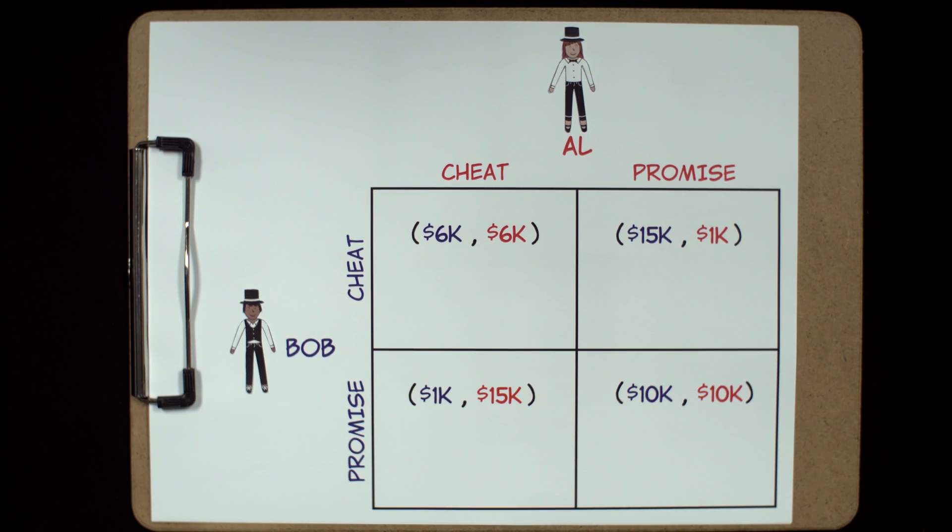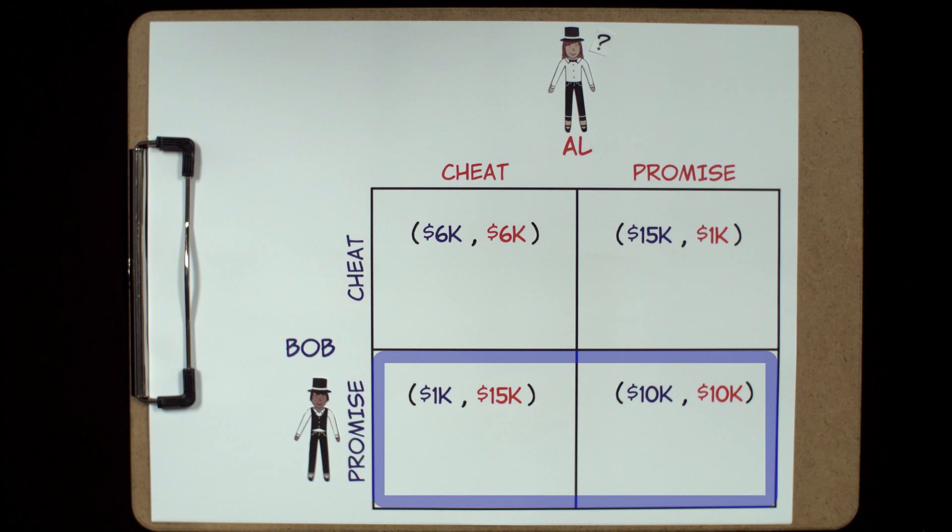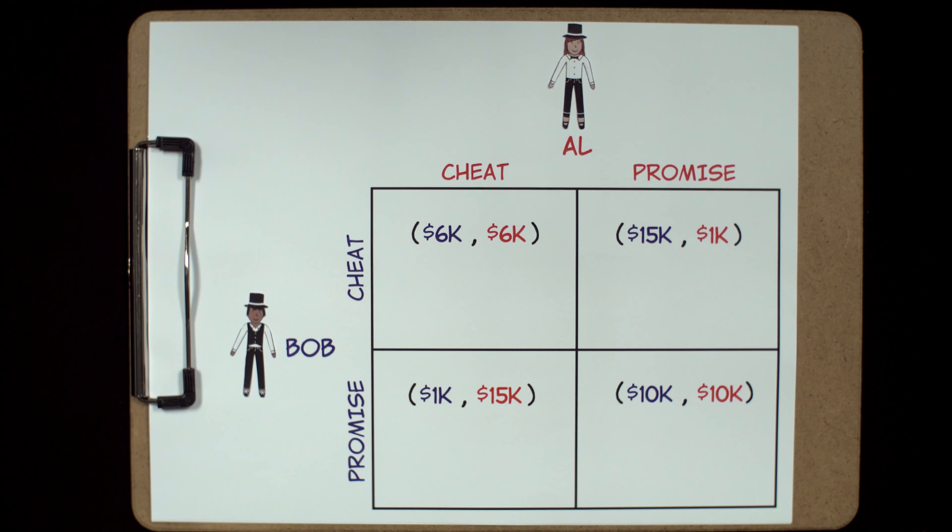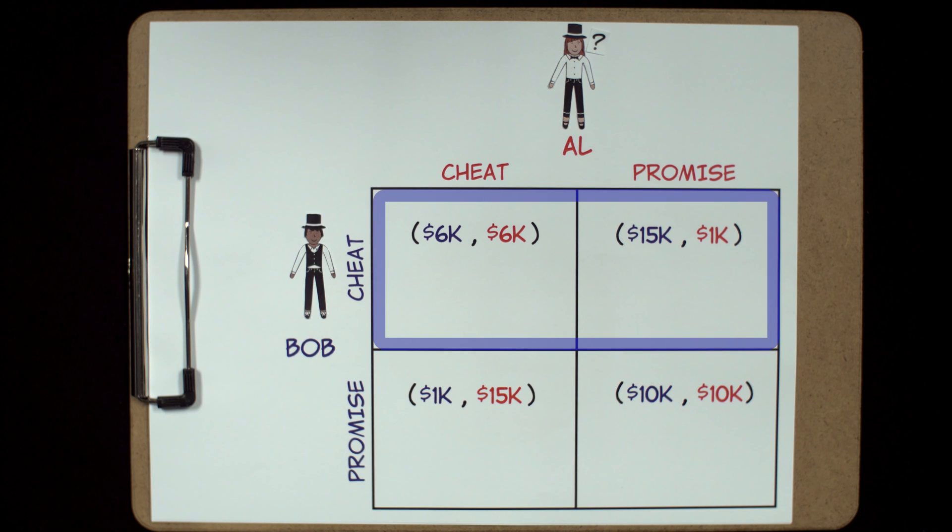Now, let's look at it from Al's perspective. I bet you can see where this is going. If Bob keeps his promise and performs one show per week, then Al's best option is to perform five shows. She'll earn $15,000 instead of $10,000. And if Bob decides to break his promise and perform five shows, Al's best option is also to cheat and perform five shows because she'll earn $6,000 instead of $1,000.